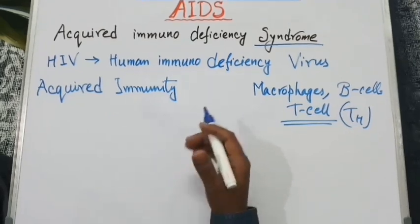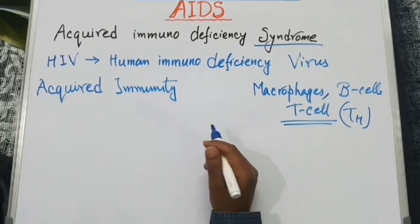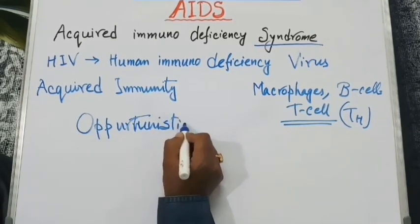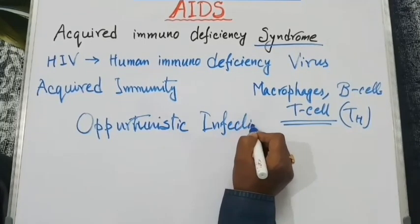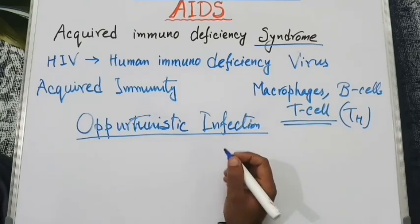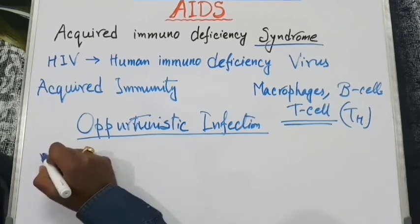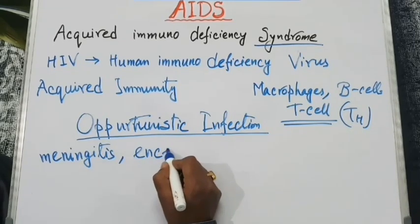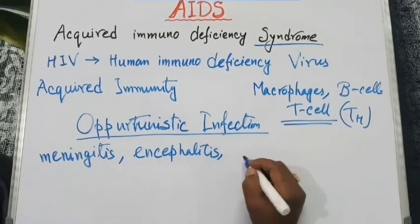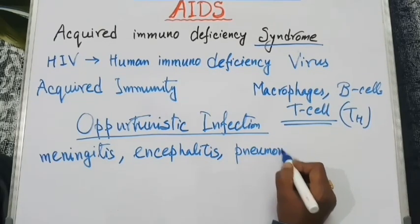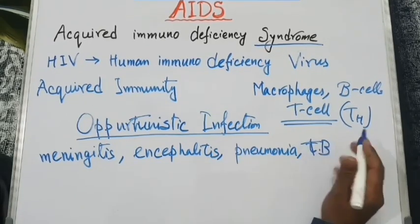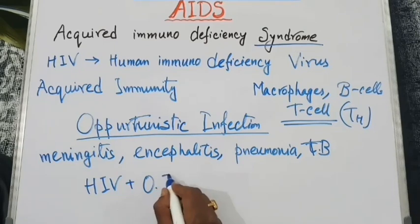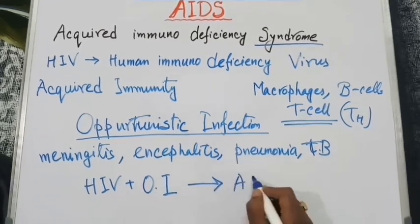In such a condition, several mild infections may lead to death. Such infections occurring during this time are known as Opportunistic Infections. Some examples of Opportunistic Infections are Meningitis, Encephalitis, Pneumonia, and TB or Tuberculosis. So HIV virus and several Opportunistic Infection-causing agents may together lead to AIDS.